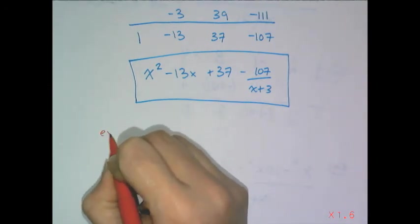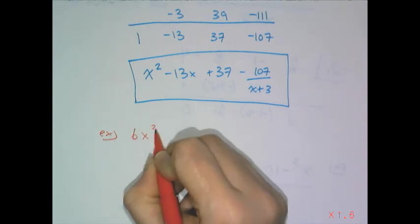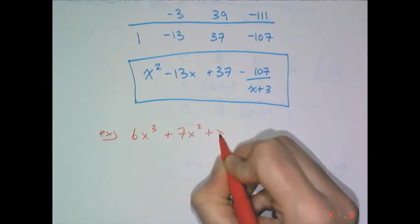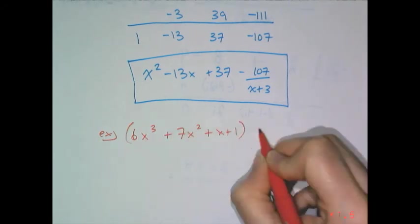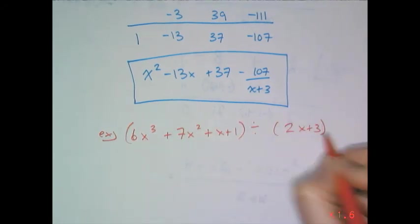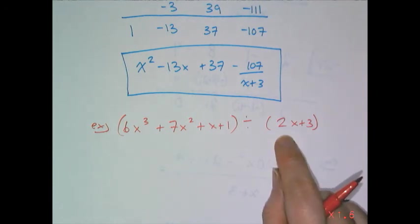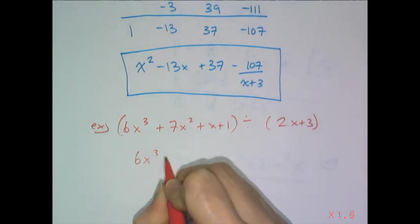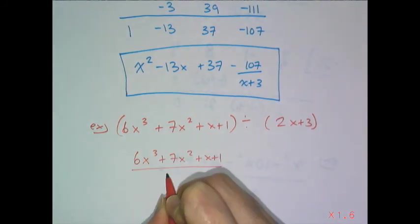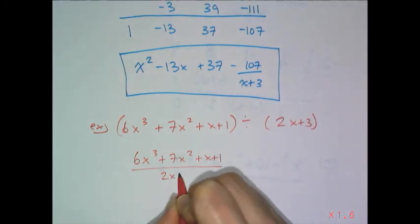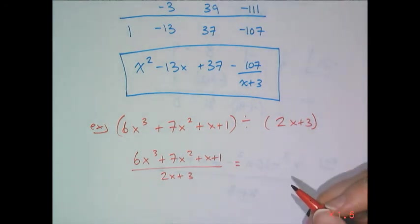Let's look at the example 6x cubed plus 7x squared plus x plus 1 and I want to divide that by 2x plus 3. My algorithm doesn't account for the linear term having a coefficient that's not 1. So what I have to do is make it have a coefficient of 1. So I can look at it in this context, 6x cubed plus 7x squared plus x plus 1 divided by 2x plus 3.